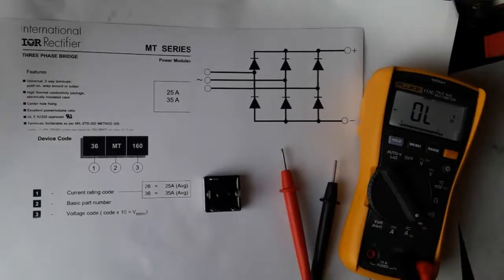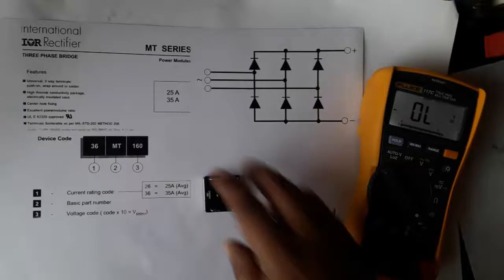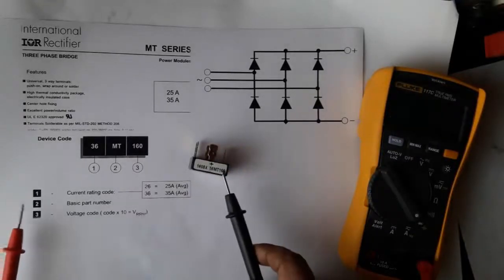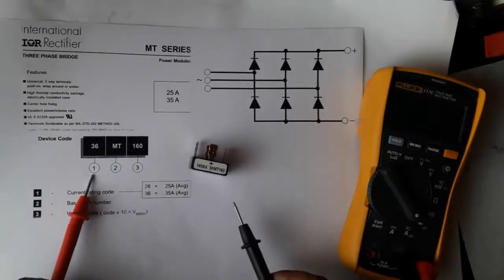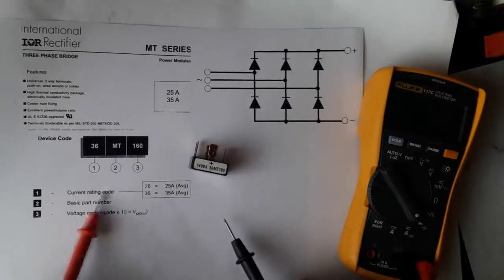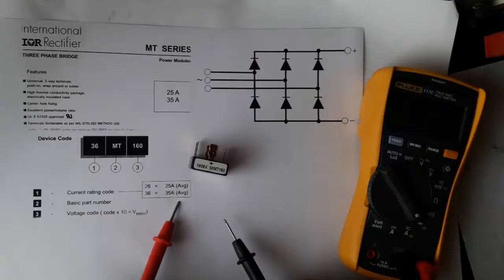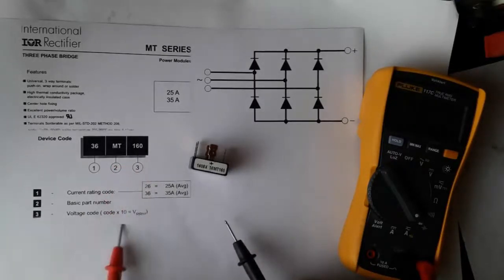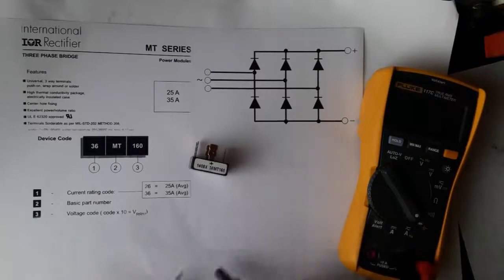So in this way we can test a three-phase bridge rectifier. For the positive terminal we use the black probe, and for the negative terminal we use the red probe. This device code 36MT160 means 35 ampere and 1600 volt. Thanks for watching, subscribe to our channel.